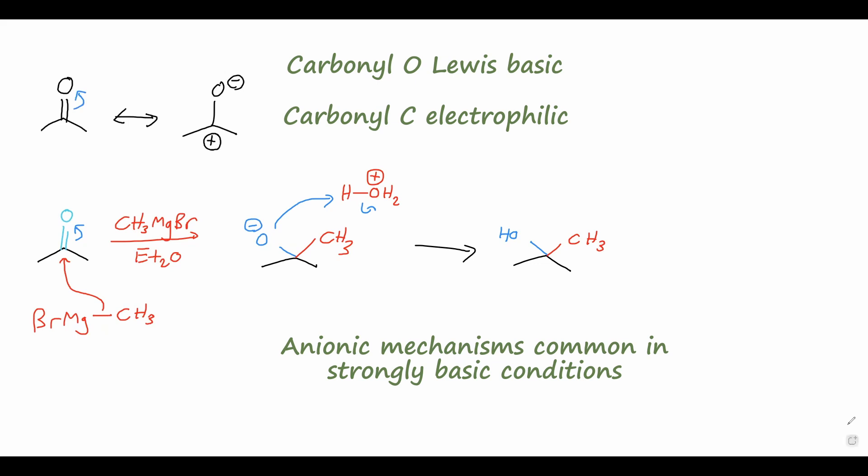We can imagine taking our acetone starting material and treating with some aqueous acid. This will lead to the formation of some amount of what we call the hydrate, or a geminal diol, because we have two alcohol groups on the same carbon atom. You'll notice I've drawn equilibrium arrows here, to denote that the reaction is reversible. Additionally, although there will always be some amount of the hydrate around in aqueous solution, they're usually not stable enough to be isolable.